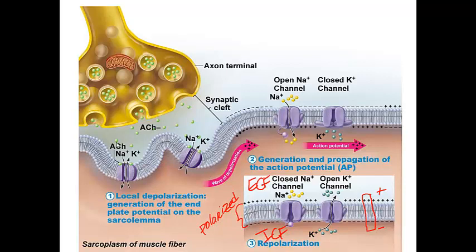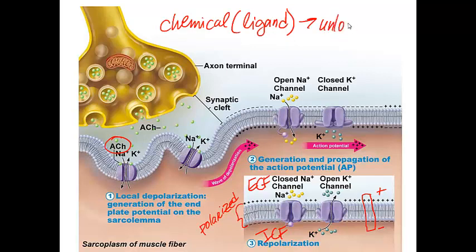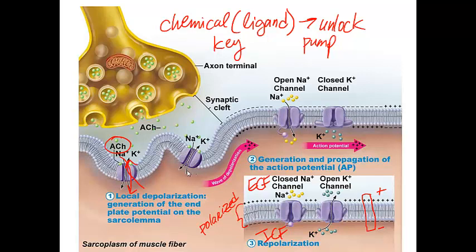When acetylcholine binds, we see chemically gated or ligand-gated channels open. A ligand is a special chemical that binds to a receptor like a key unlocking a lock — in this case, it unlocks a specialized gated ion channel. This allows sodium to enter the cell at the sarcolemma, while potassium exits the cell. When this occurs, there is a change in potential called local depolarization, and an action potential can now continue down the sarcolemma into the interior of the muscle.